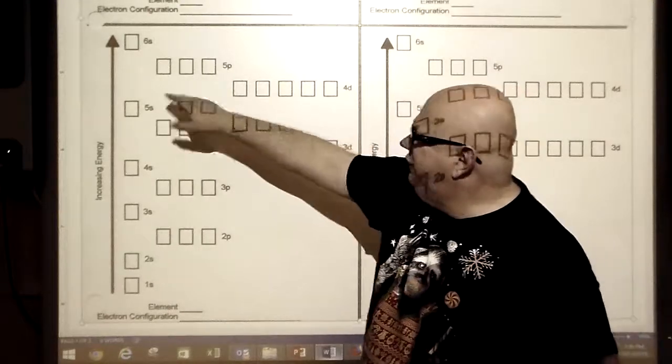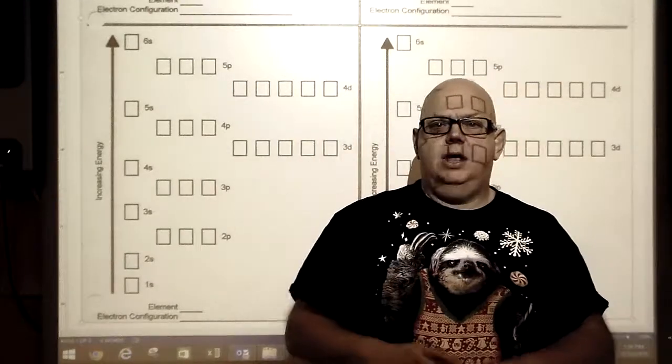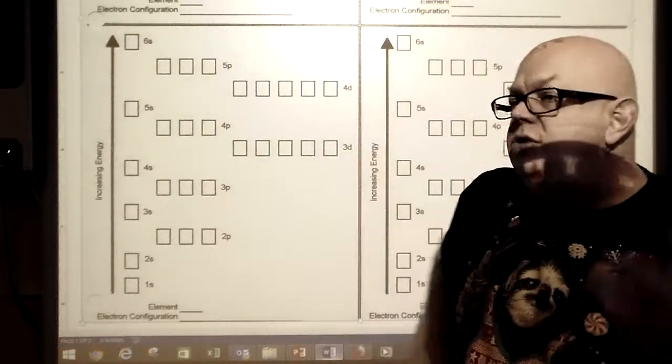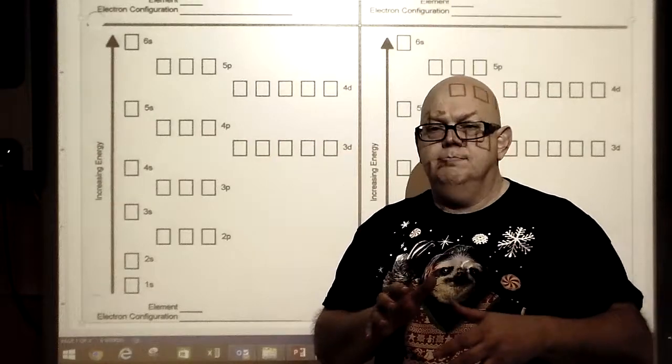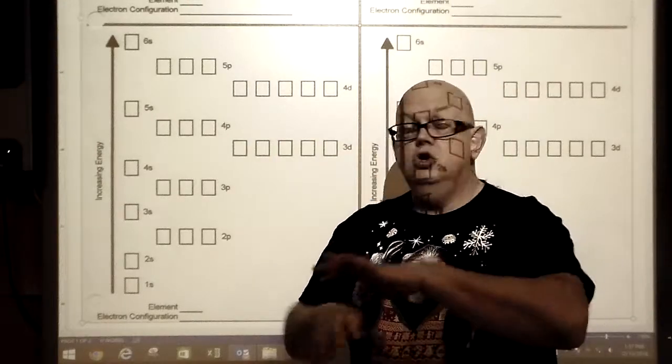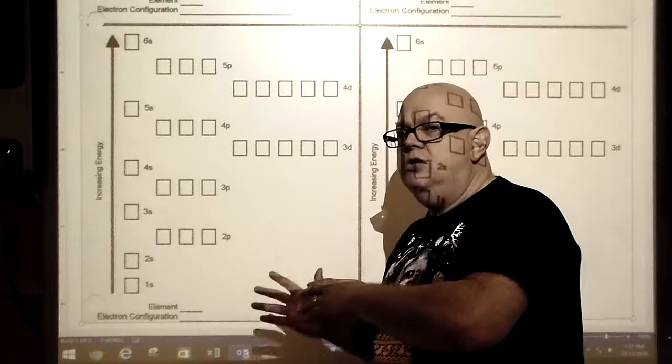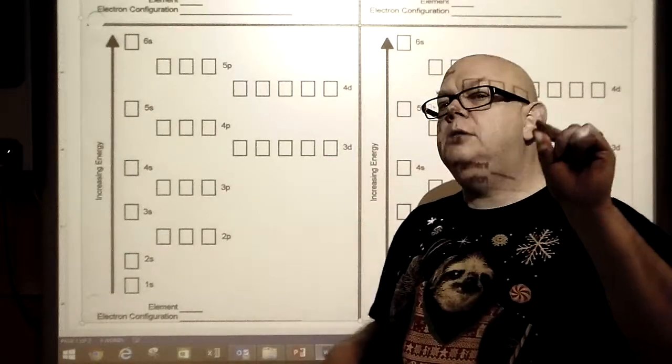With atoms, in the center you have protons and neutrons. Protons have a positive charge, neutrons don't have a charge. But to balance out what's in the nucleus, you have these tiny particles called electrons.